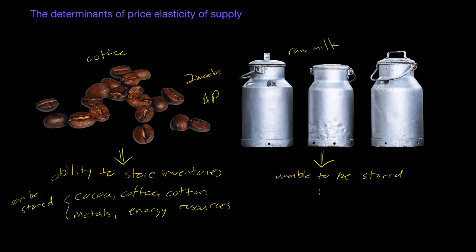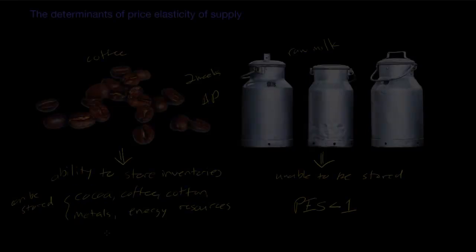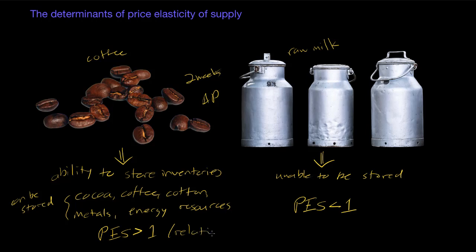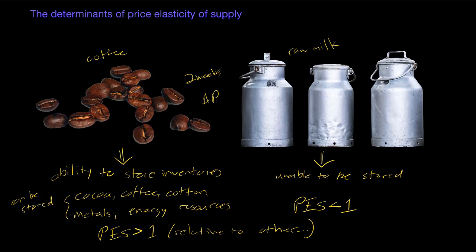Raw milk will go bad after a week or two. Therefore, producers of raw milk cannot quickly increase their production in a short period of time — you simply can't produce more dairy cows in two weeks. So the supply for milk will be relatively inelastic because of the inability to store inventories, whereas the supply of primary commodities that can be easily stored will be relatively elastic. The ability to store inventories is an important determinant of price elasticity of supply.